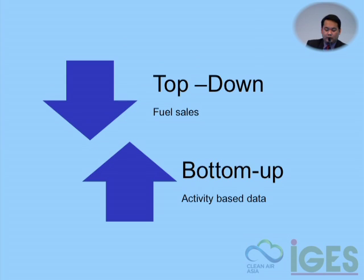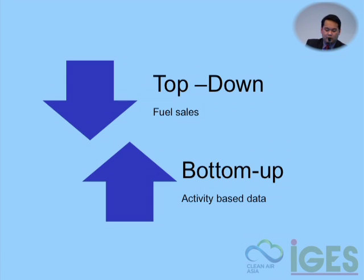Another limitation of fuel sales data is that even if you know how much fuel is consumed, you don't know which interventions would be most effective in lowering consumption. In the bottom-up approach, you have some idea of how much travel is being done, how it's being made, and the fuel efficiencies of modes — so you can use the avoid-shift-improve concept and the ASIF equation to come up with more robust emissions reduction analysis.